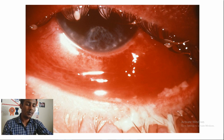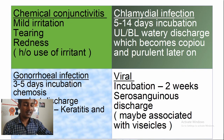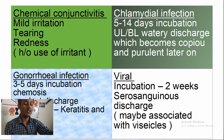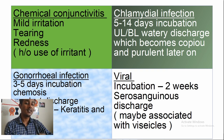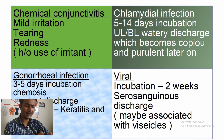If it's chemical conjunctivitis from silver nitrate — Crede's method — it's currently discontinued, because what was previously used as prophylaxis became a cause of conjunctivitis itself. There will be mild irritation, tearing, and redness, but most importantly a history of irritant use. You can't have chemical conjunctivitis without a chemical. For chlamydial infection, the incubation is 5 to 14 days — 1 to 2 weeks — so it does not happen immediately.